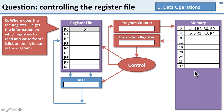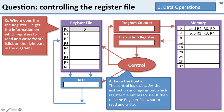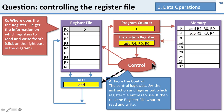Another question on controlling the register file: where does the register file get information on which registers to read and write from? The answer is from the control logic. The control logic takes the instruction, decodes it, and tells the register file what to do. For example, looking at instruction 0, it tells the ALU to do addition and tells the register file to access the two source registers. Finally, it tells the register file which register to write back to. So the control decodes the instruction and tells the rest of the processor what to do.